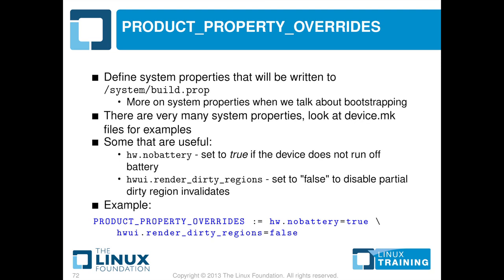One other thing I want to look at within device.mk is PRODUCT_PROPERTY_OVERRIDES. This is a place where you get to define Android system properties, which define how Android behaves. On the slide, we've got a couple of examples: hw.nobattery, which says this device doesn't have a battery, and hw.ui.render_dirty_regions, which is a tweak that improves GPU performance in this particular case.